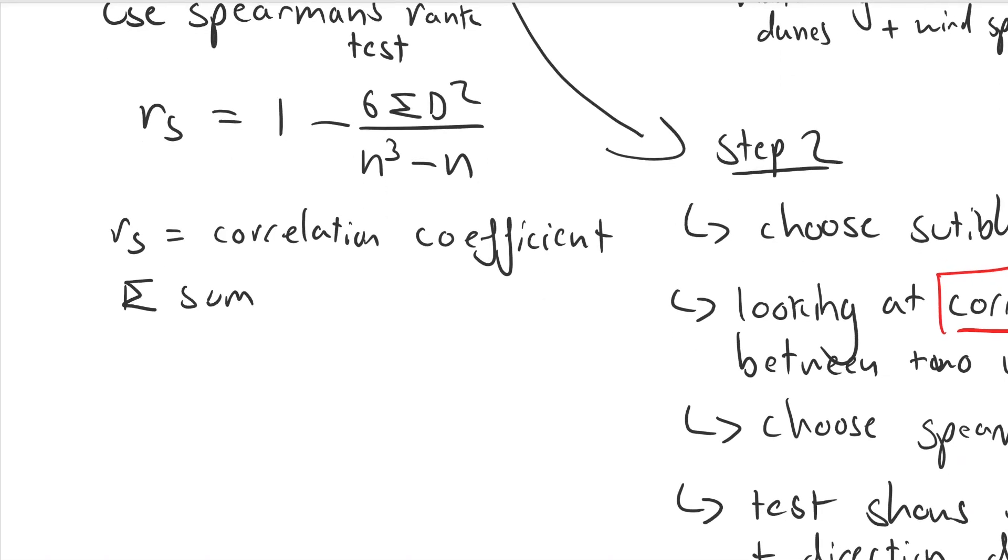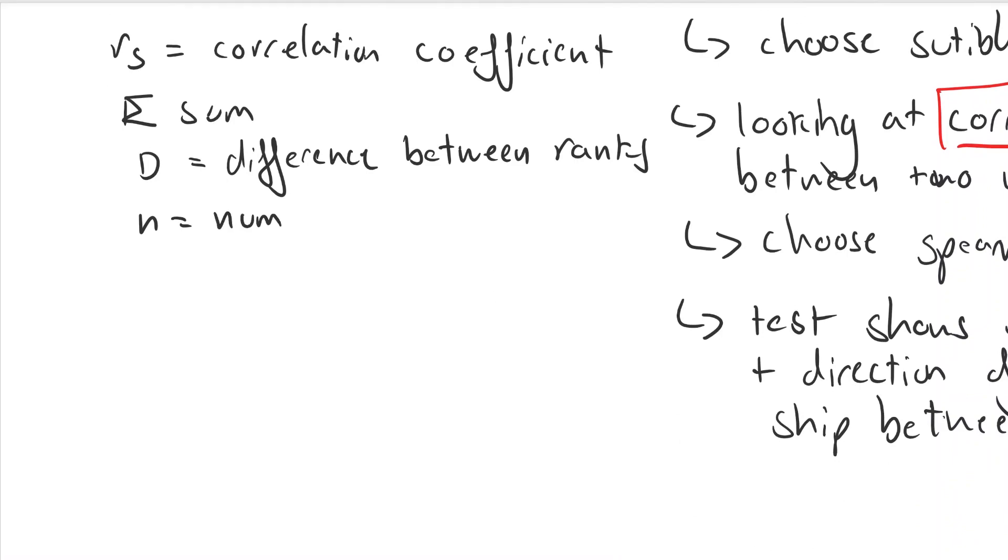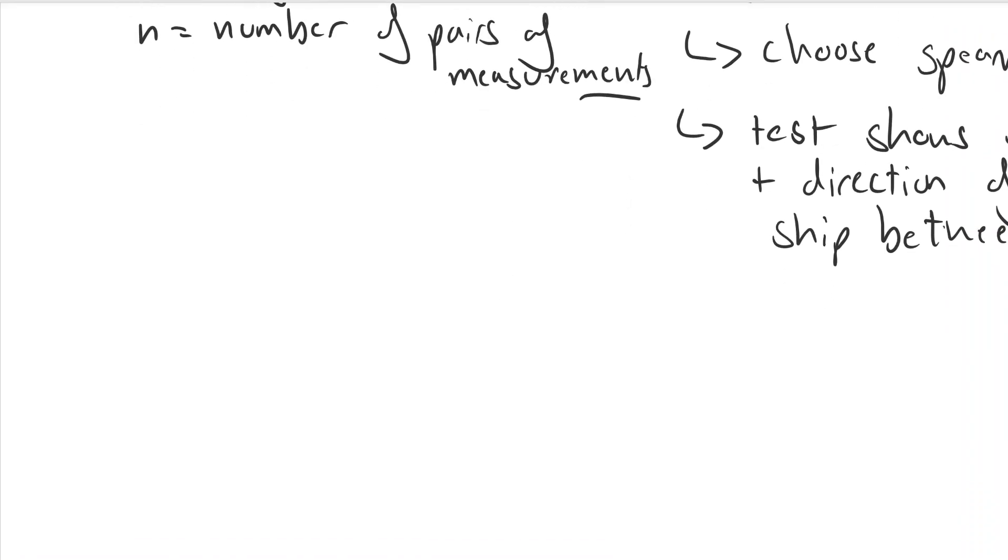The sigma is the sum of d is the difference between the ranks and n is the number of pairs of measurements. We're going to have to have all this data in a table to be able to know what the difference between the ranks are. So we're going to have to write out a big table which means it's unlikely they'd ask you to do much of this in an A-level paper except maybe analyzing it.